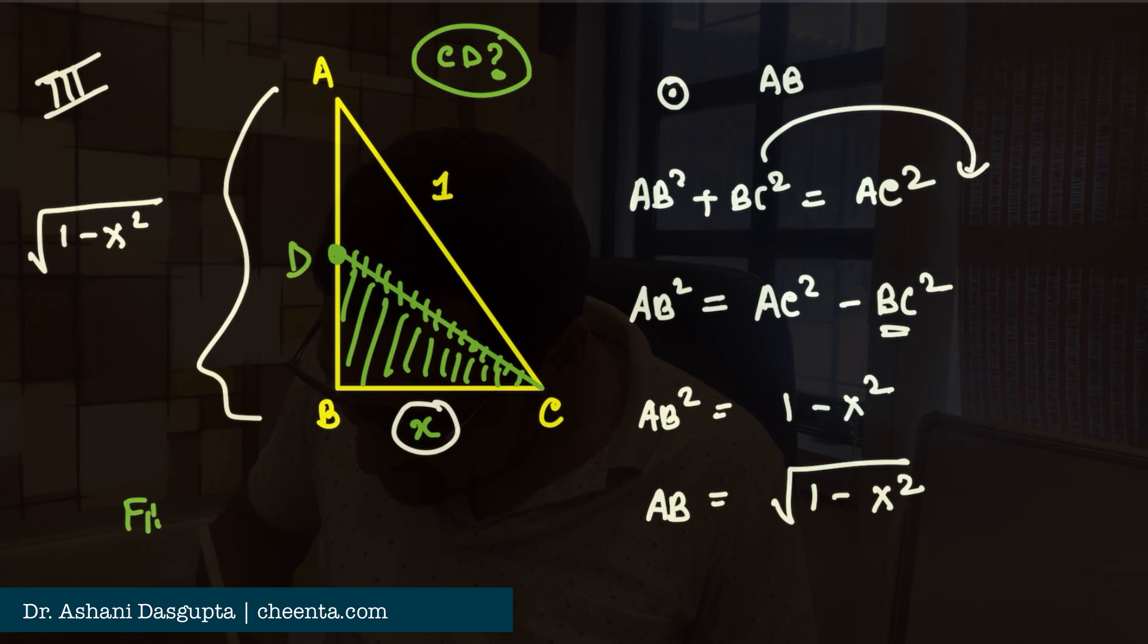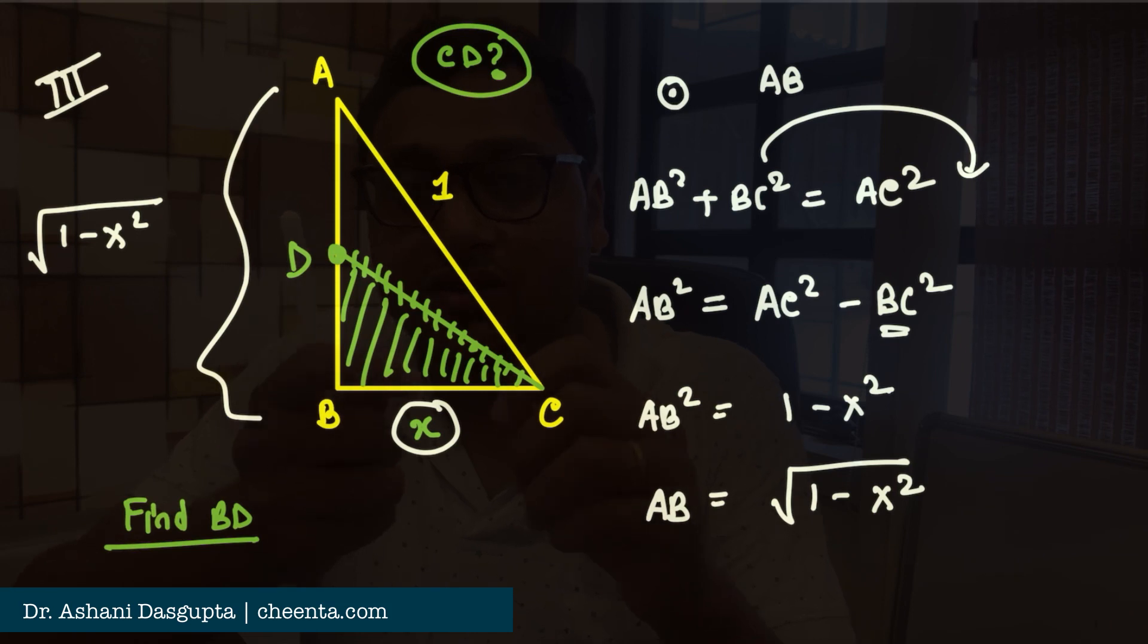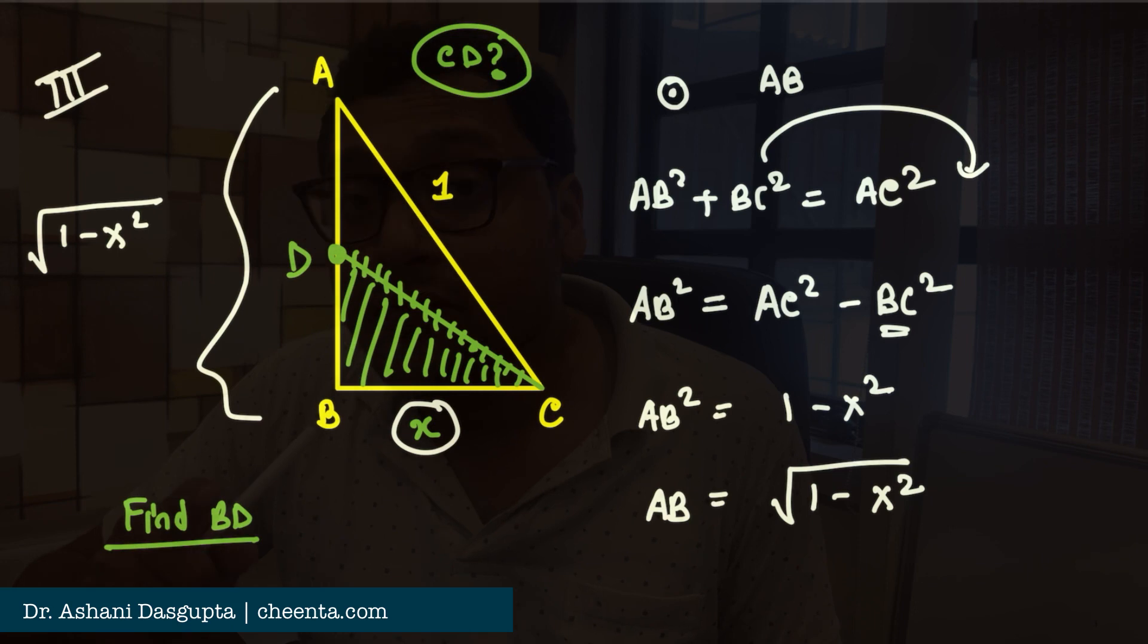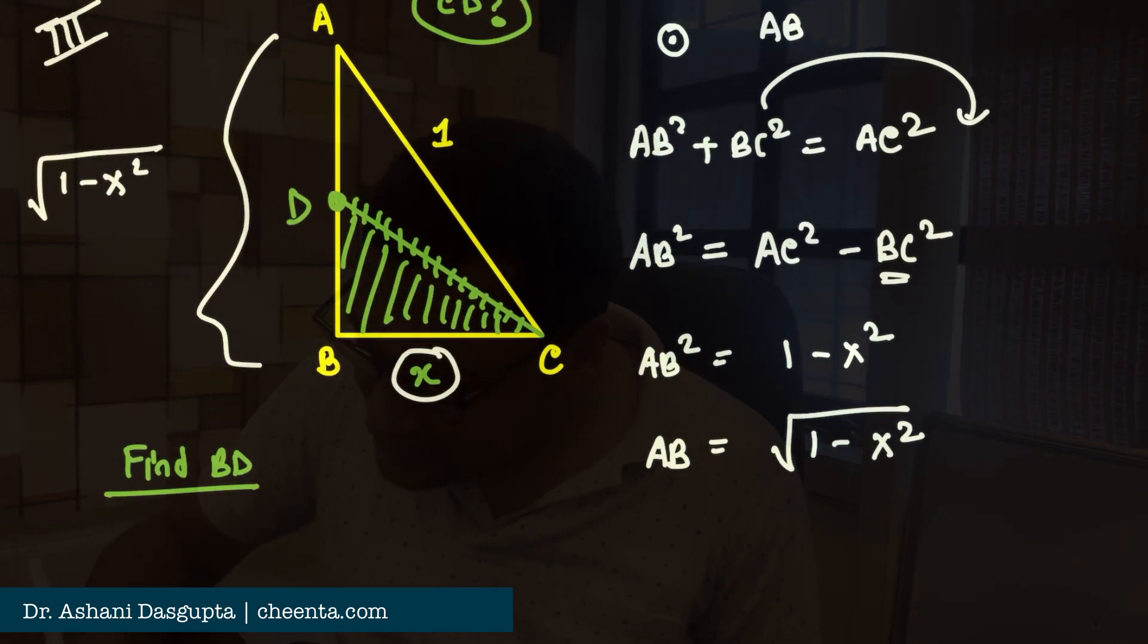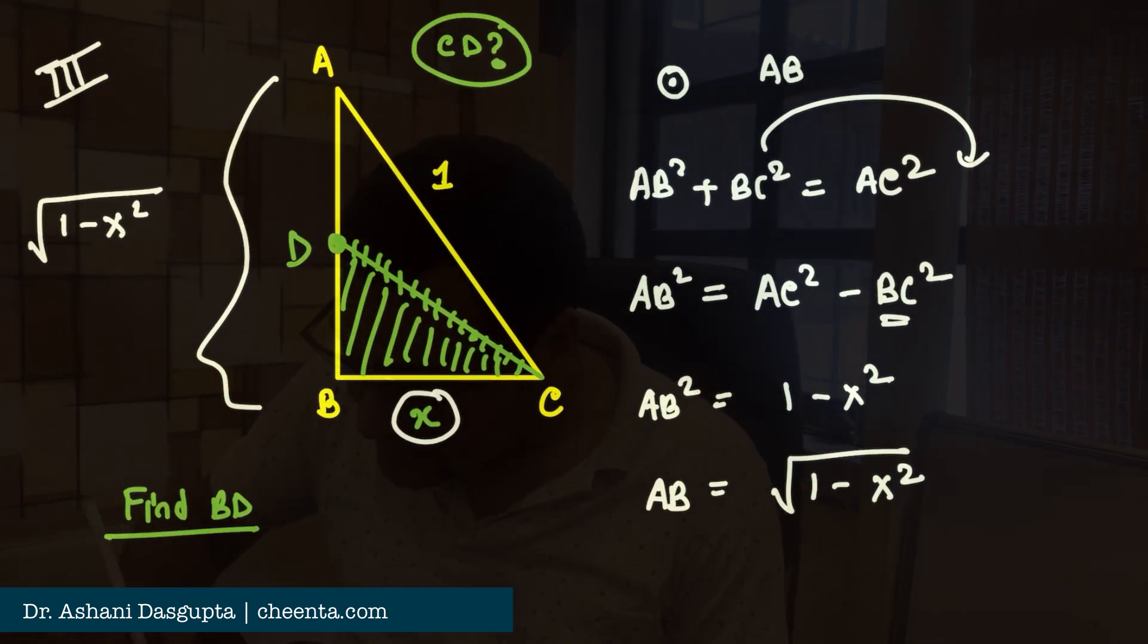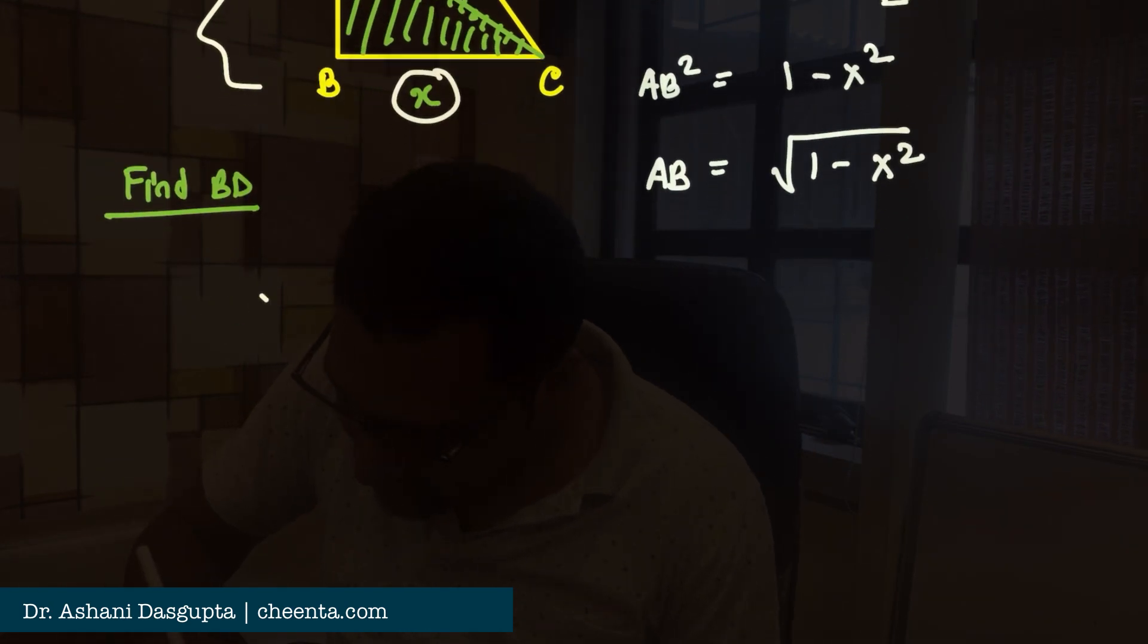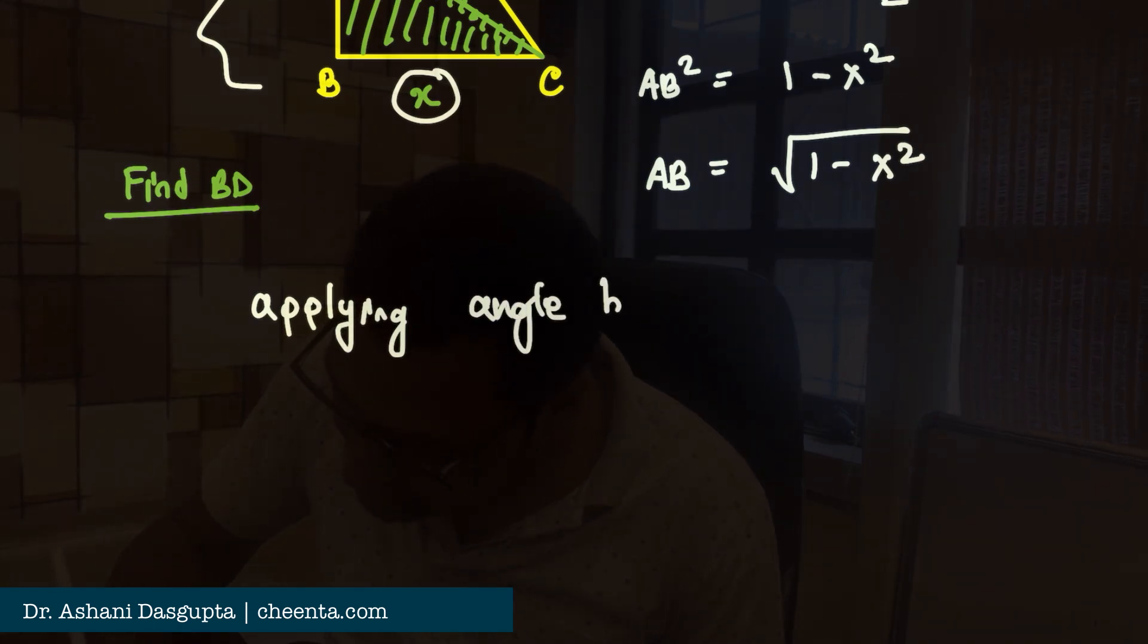So, find BD. That's my next mission. Once we have BD, we can use Pythagoras theorem to find CD. Right? So, to do that, to find BD, we have to use the angle bisector theorem. So, it's given that CD is the angle bisector of angle C. That's what's given. So, applying angle bisector theorem.